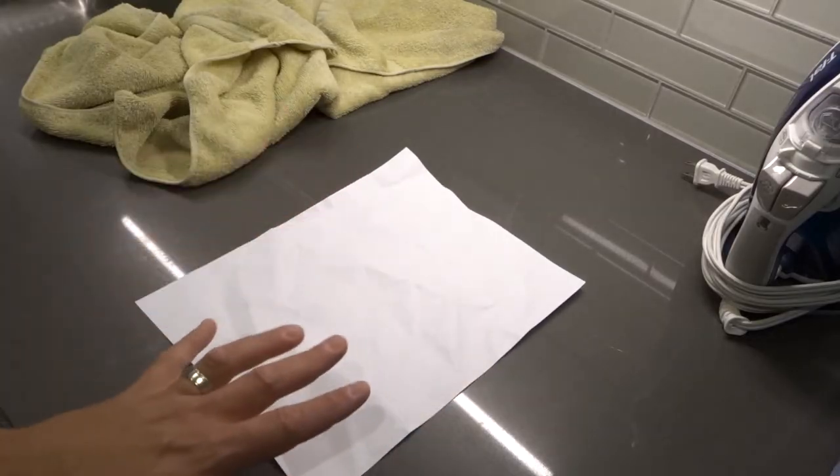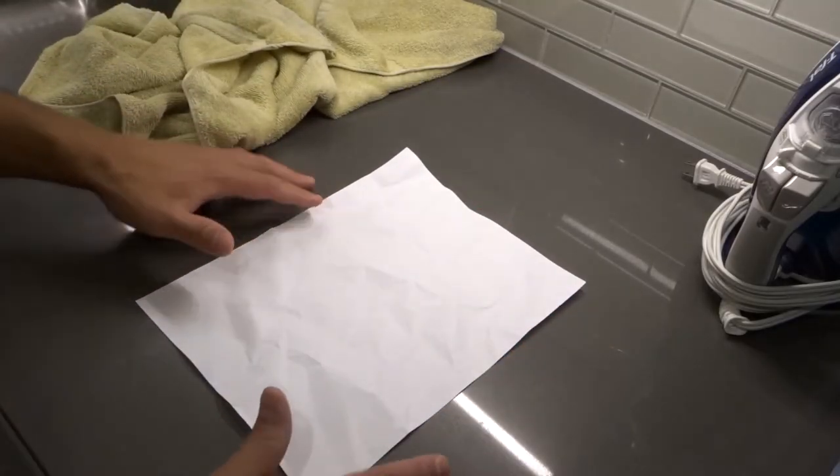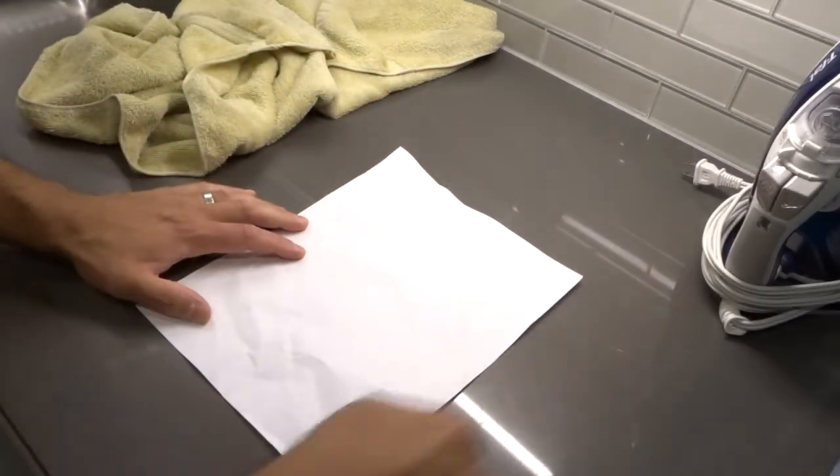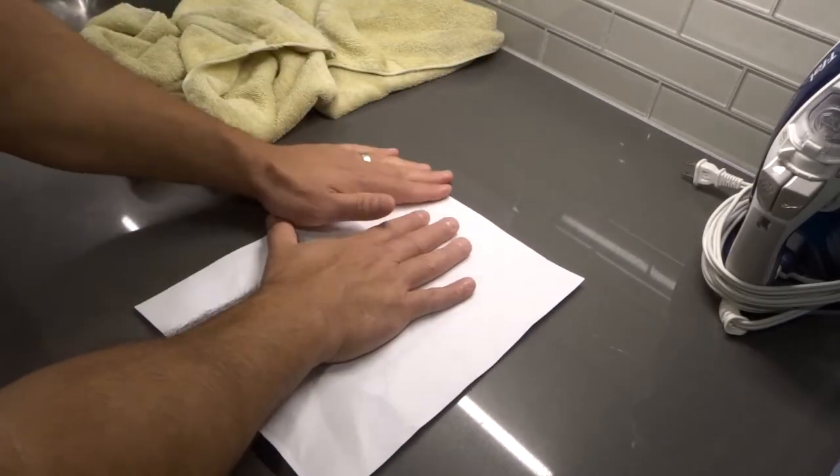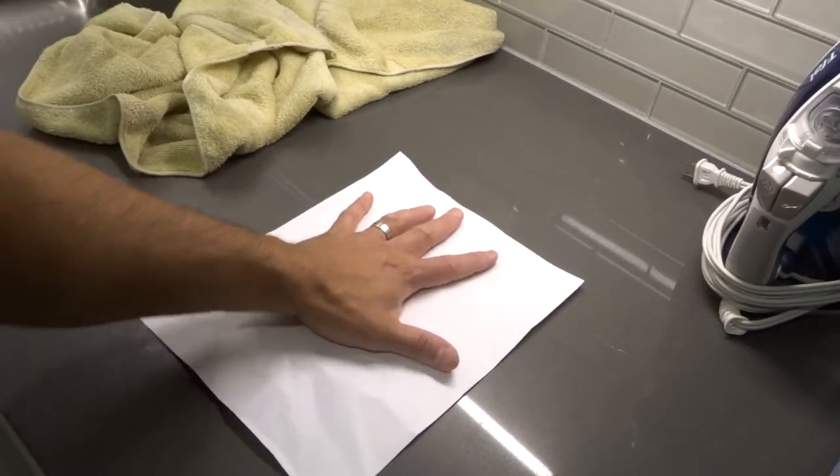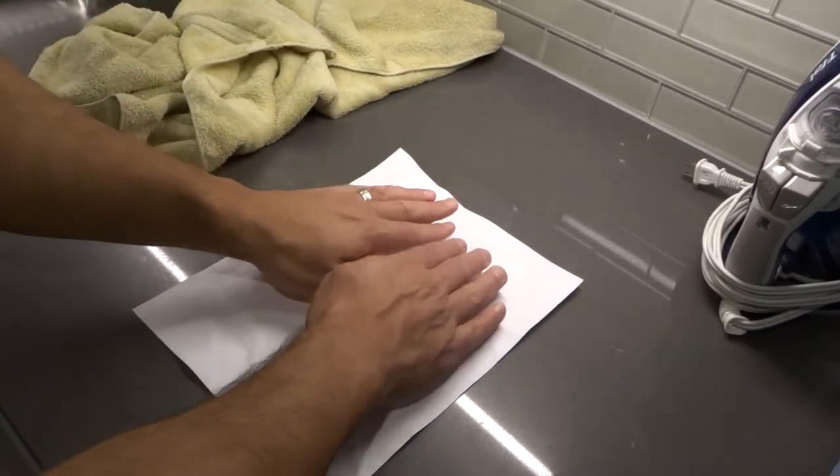Once your paper is nice and malleable, what you want to do is get something really heavy and flat that is larger than the sheet of paper, probably like a big textbook. You want to place it on top of the paper and put as much weight as needed onto that piece of paper. So it can be three textbooks, five textbooks. What that's going to do is basically hold the paper down.